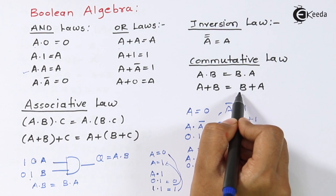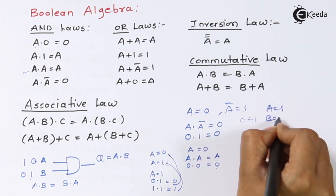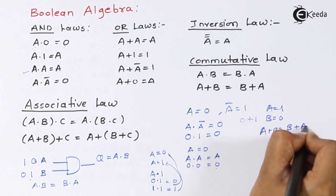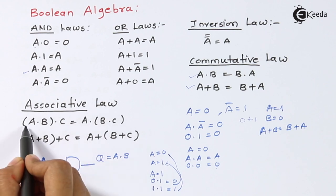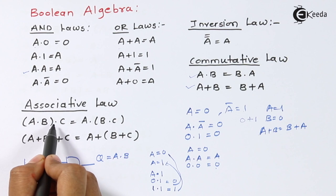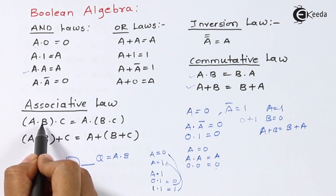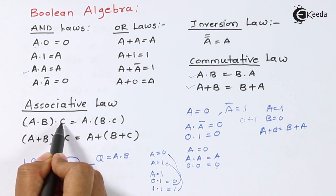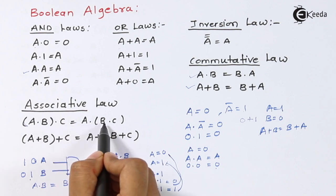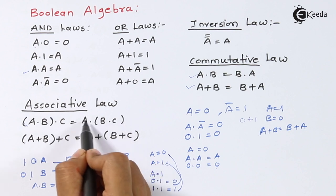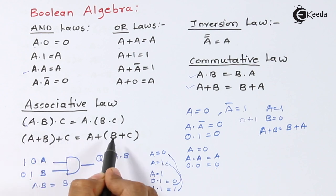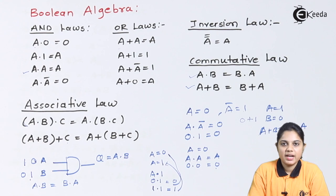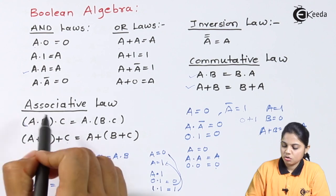Similarly, A plus B equals B plus A. Even if A is 1 and B is 0, whether you add A plus B or B plus A, the output remains the same. So these two are the commutative laws. Next is the associative law, which states that (A dot B) dot C equals A dot (B dot C) — you are ANDing A and B separately and the result is ANDed with C, or you can associate B and C first. For addition, A plus (B plus C) can be written as (A plus B) plus C, and since it is addition, separating the parameters does not affect anything.